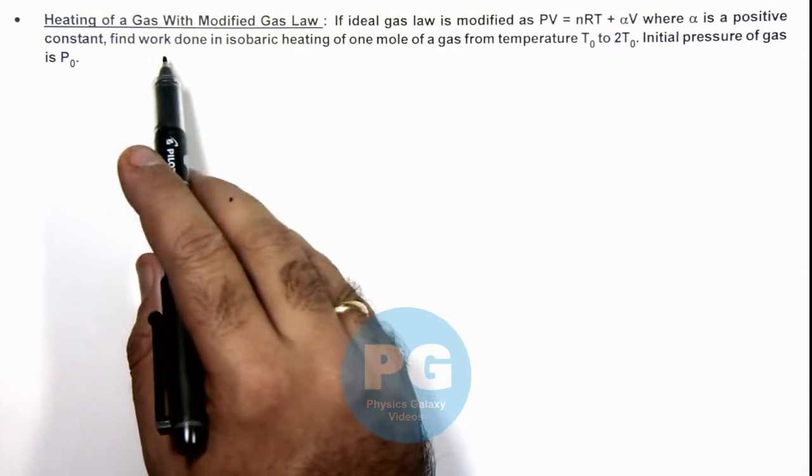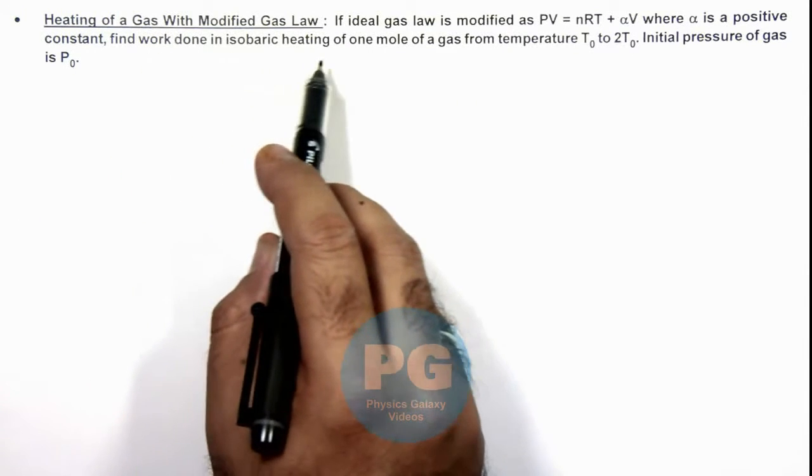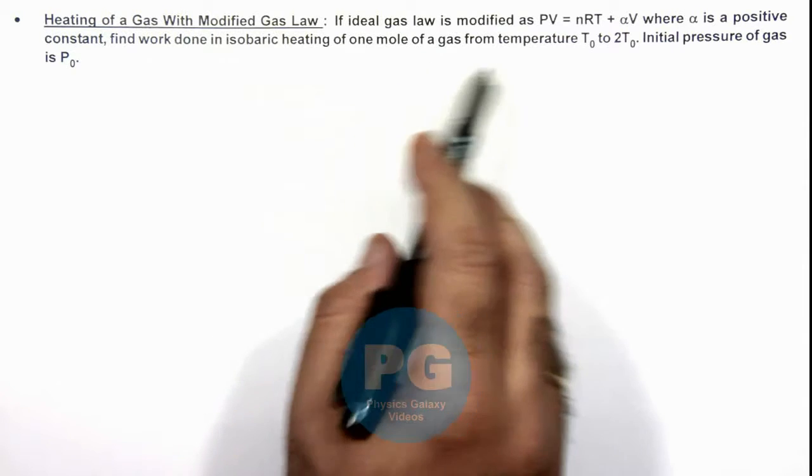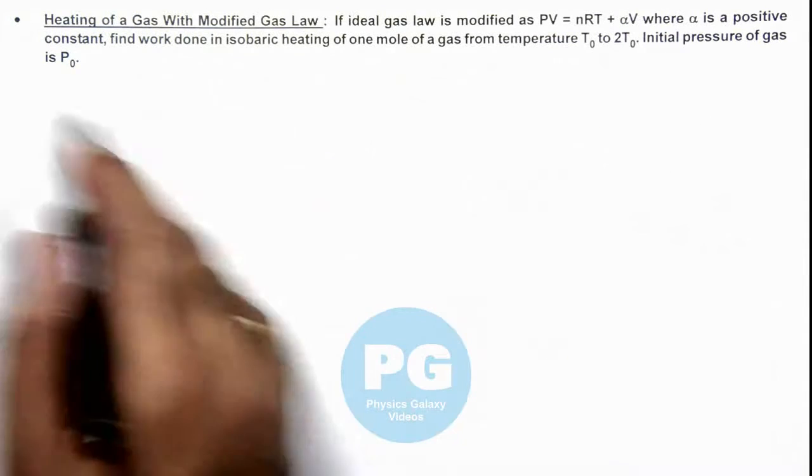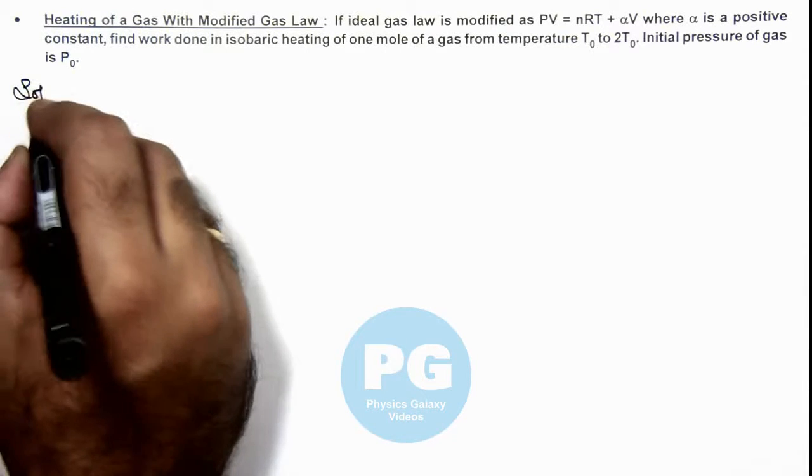We are required to find the work done in isobaric heating of 1 mole of a gas from temperature T₀ to 2T₀, where initial pressure of gas is given as P₀.